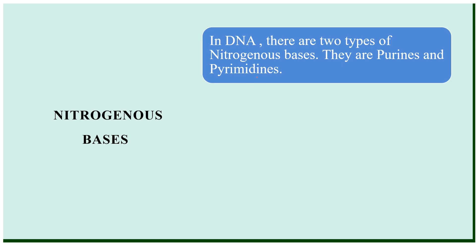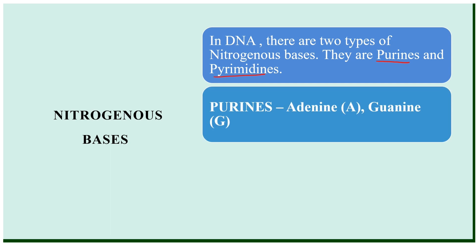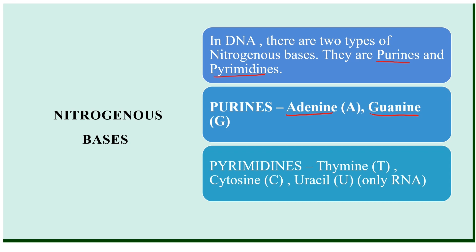There are two types of nitrogenous bases: purines and pyrimidines. Under purines, you have adenine (A) and guanine (G). Under pyrimidines, you have thymine (T), cytosine (C), and uracil (U). Note that uracil is present only in RNA, whereas thymine and cytosine are present in DNA. So the nitrogenous bases in DNA are adenine, guanine, thymine, and cytosine.